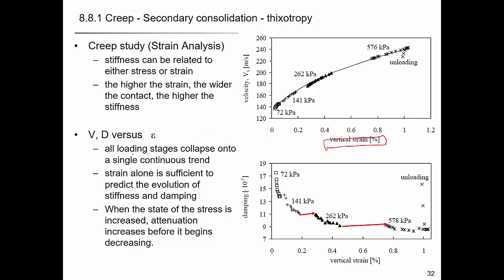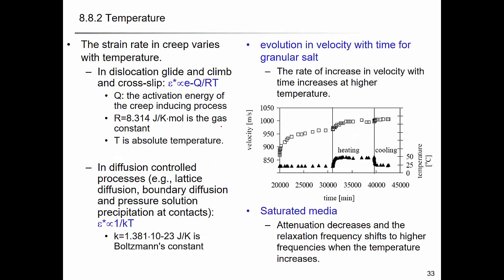All loading stages collapse onto a single continuous strain curve. For temperature effects, increasing temperature increases vertical strain and accelerates creep behavior. Using salt (sodium chloride) specimens, heating to 50 degrees Celsius produces an increase in velocity, and during cooling the velocity stays at the elevated level.